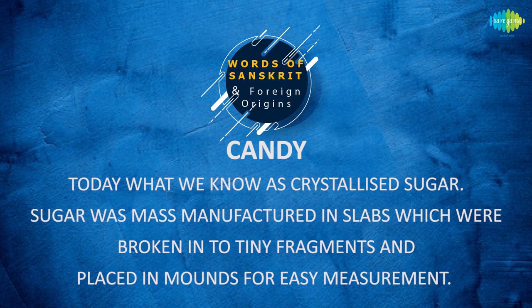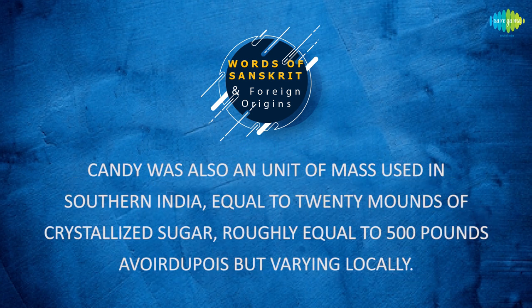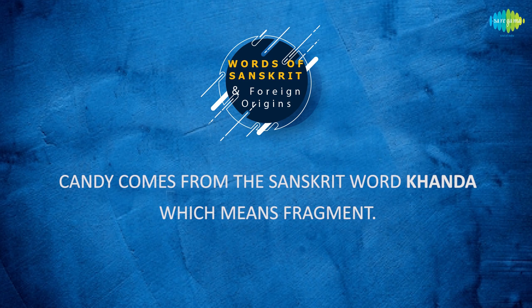Candy is today what we know as crystallized sugar. Sugar was mass manufactured in slabs which were broken into tiny fragments and placed in mounds for easy measurement. Candy was also a unit of mass used in southern India equal to 20 mounds of crystallized sugar, roughly equal to about 500 pounds but varying locally.